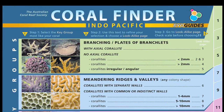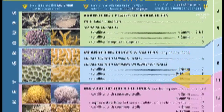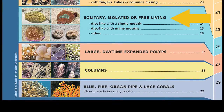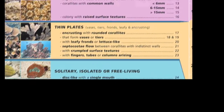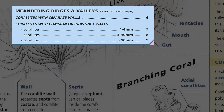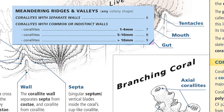For example, corals that are branching, or corals that have meandering valleys on their surface. Other key groups are based on the way the coral lives — for example, whether it is attached to the bottom or not, or whether it has large polyps expanded during the day. The key uses simple visuals and keeps text to a minimum. When text is used, it is limited to plain language and the few key terms in blue that you learned from the earlier diagram.